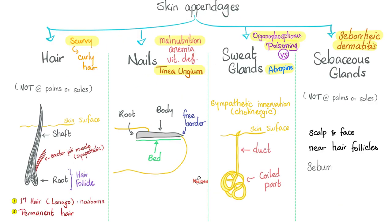Your skin has color determined by pigments, and it has appendages. Deeper to your skin, there is fascia — superficial fascia and deep fascia. Don't be like the authors of Grey's Anatomy, 41st edition, who said, quote, superficial fascia and deep fascia are no longer included in the Terminologia Anatomica — and then continued to talk about superficial fascia and deep fascia in chapters 26, 29, 30, 43, and many others, as if they said nothing in chapter 2. Which probably means they did not read their own book before publishing it.